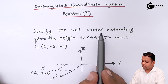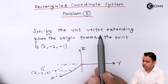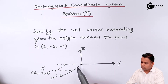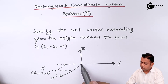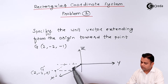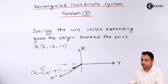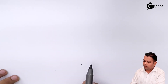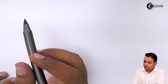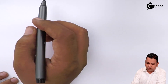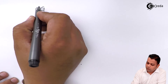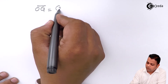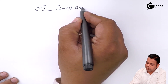We need the unit vector extending from the origin. The origin is the intersection of the three axes x, y, z. So a vector from this origin towards this particular point G is what we want. The vector joining origin to point G, we can represent as OG bar. It is equal to (2 minus 0) in the x-direction, and similarly for the other components.